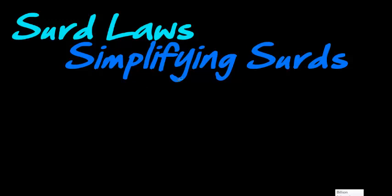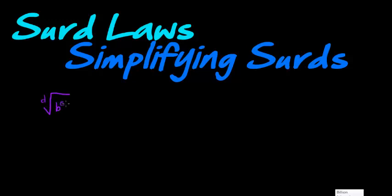We're doing CERD laws and we just looked at CERD law 1 and CERD law 2. I want to focus on CERD law 2, but let's quickly write down CERD law 1 again: if I have a radical with degree D and inside my radical I've got a base and an exponent, then my exponent can be divided by the radical's degree.